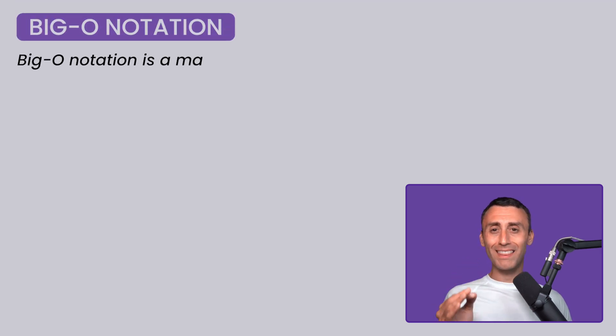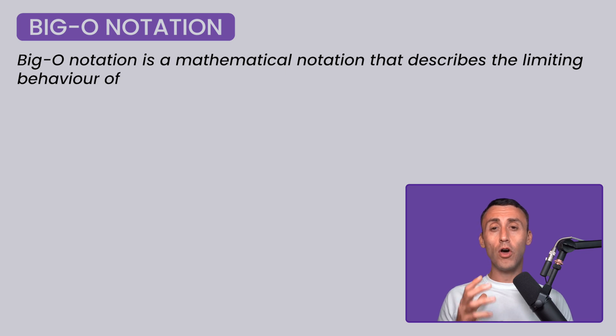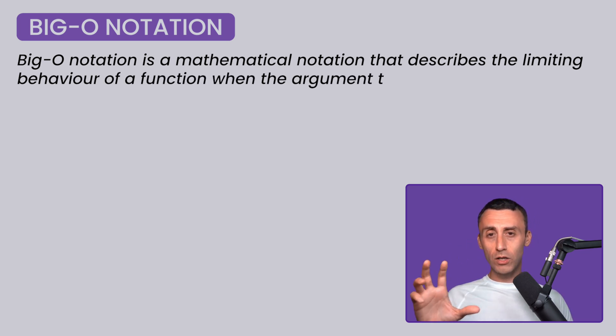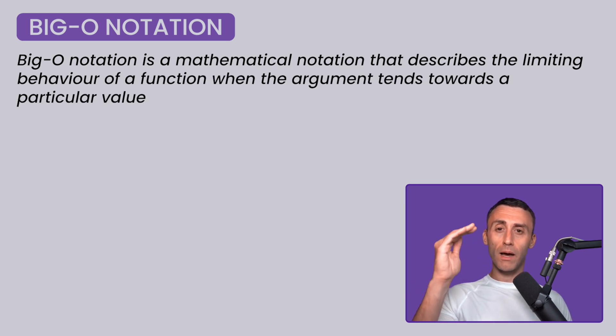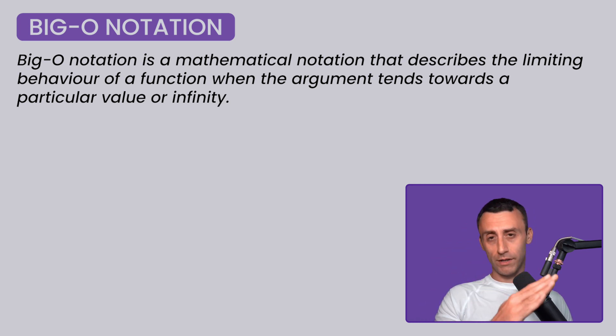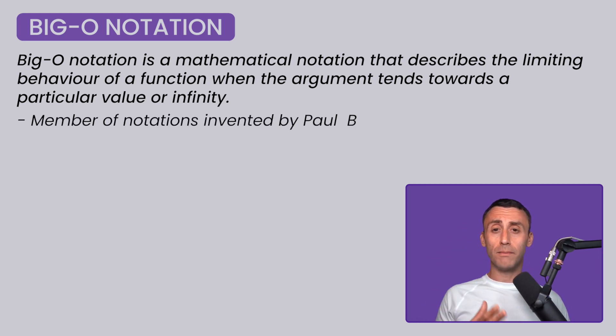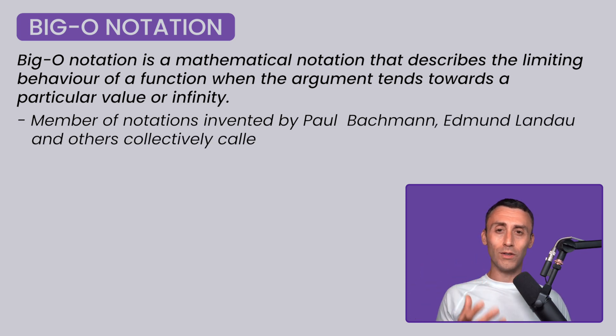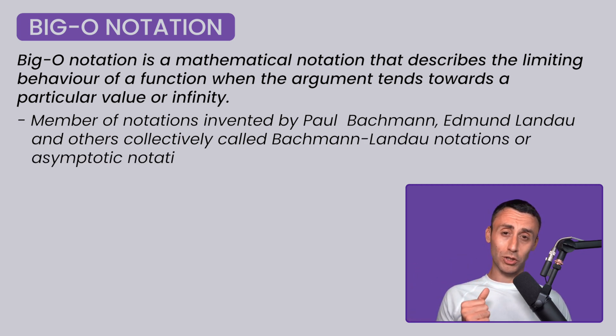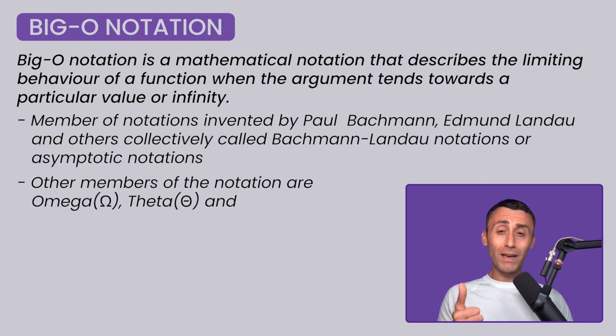Big O notation is a mathematical notation that describes the limiting behavior of a function when the argument tends towards a particular value or infinity. It's a member of a family of notations invented by Paul Bachmann, Edmund Landau, and others, collectively called Bachmann-Landau notation, or asymptotic notation. Other notations are omega, theta, and little o notation.